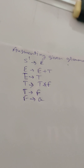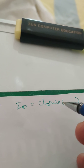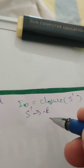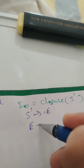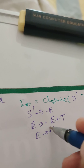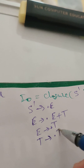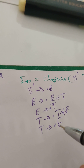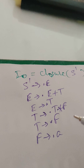The first step is to find the closure of the starting non-terminal S'. So we have I0 — it's the closure of S', that is S' → .E. After the dot there is E, which is a non-terminal, so we write the rules of E: E → .E+T and E → .T. After the dot we get non-terminal T, so we write rules of T: T → .T*F and T → .F. After the dot we get non-terminal F, so we write F → .A, a terminal. I0 is now complete.